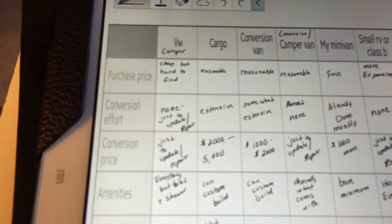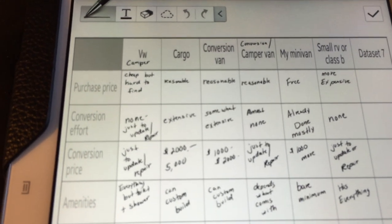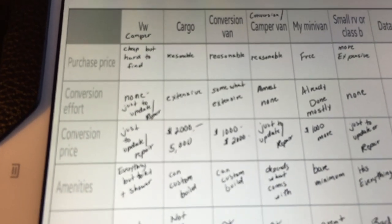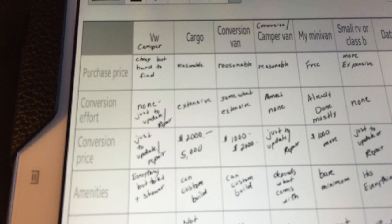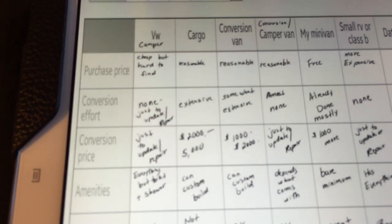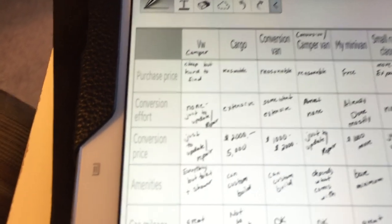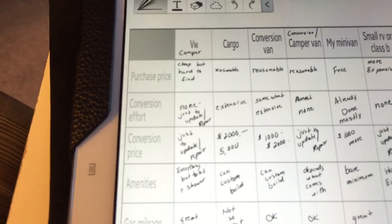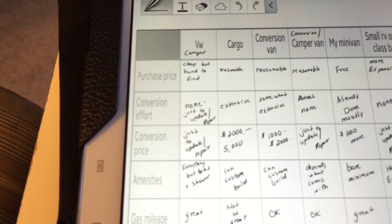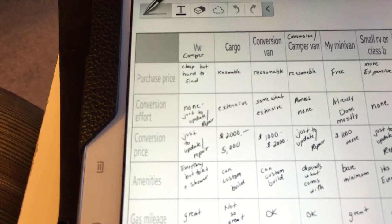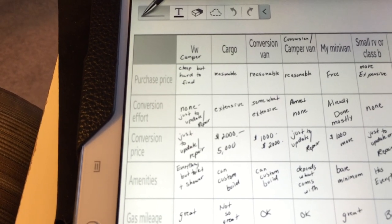And then under conversion effort, under each column, I have none, just update or repair. That's if I got like a Westfalia or something like that. But I think that's out of the question now because everyone's saying they break down a lot and I don't repair cars, so that would be a bad idea for me by myself in the middle of nowhere with a car that breaks down a lot.